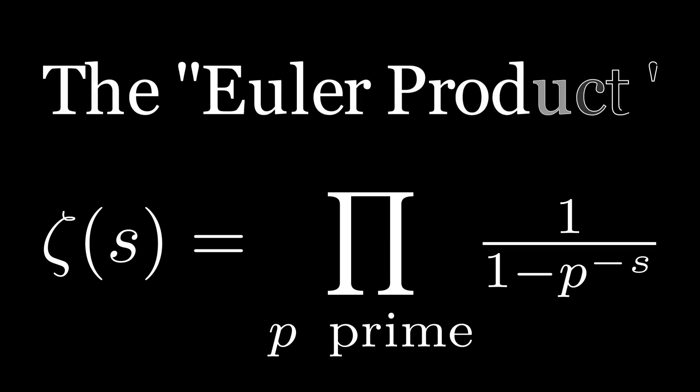This infinite product is called an Euler product, and other series similar to that of the Riemann zeta function tend to have these Euler product expansions as well.